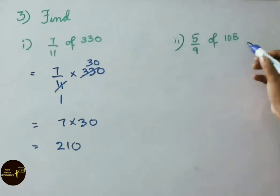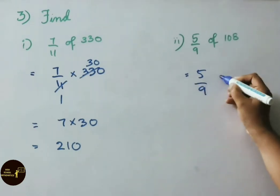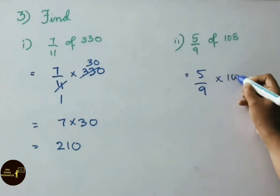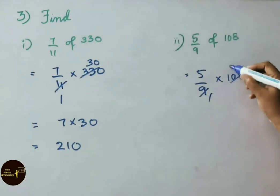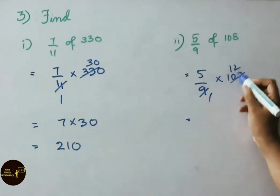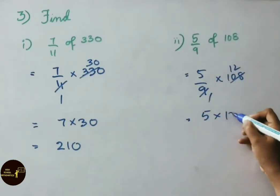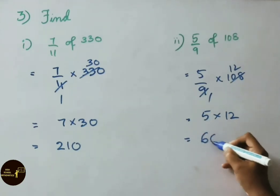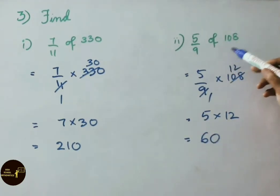The second sum: 5 by 9 of 108 equals 5 by 9 into 108. In the 9 times table, 9 twelves are 108. Now multiply the numerators: 5 into 12 is 60. Therefore, 5 by 9 of 108 equals 60.